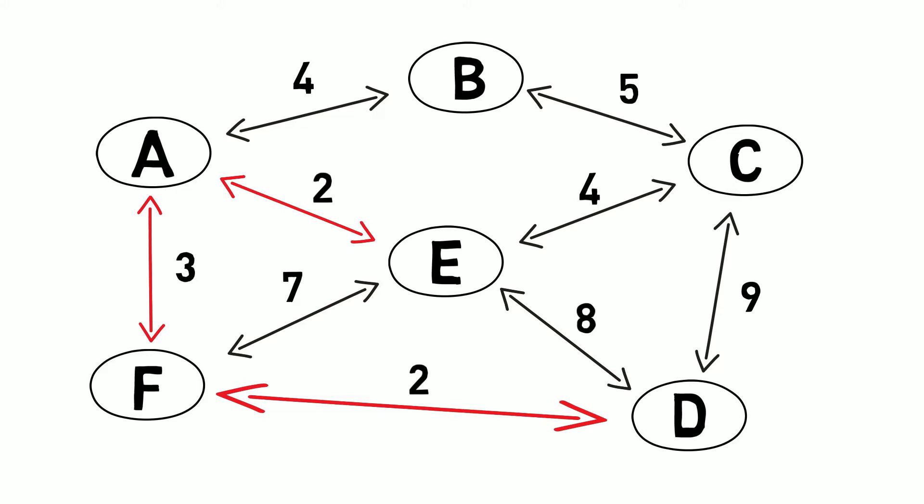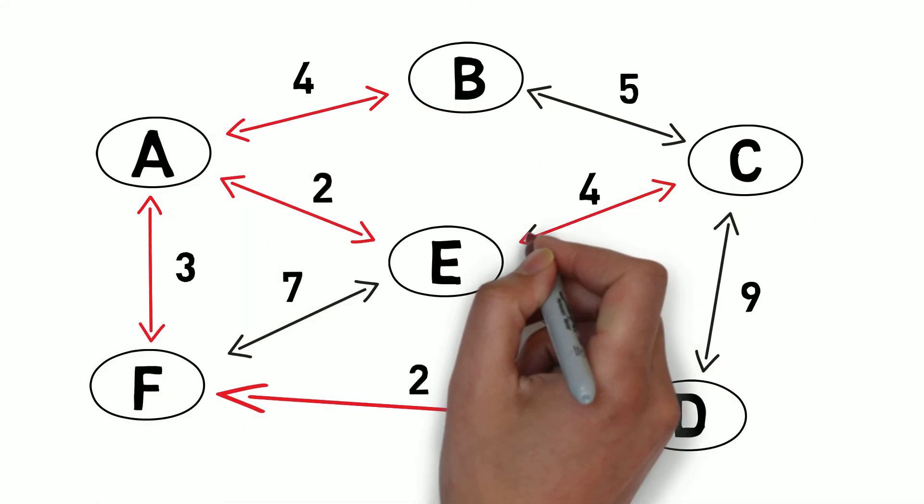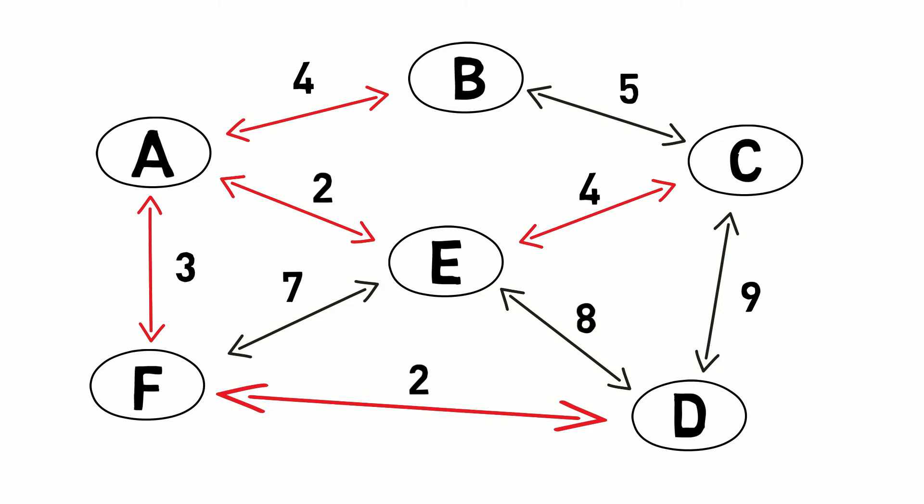The next smallest looks to be two 4's. We can start with A to B, then we can do E to C. When we do these, we have a connection between every single vertex. Since we started with the smallest vertices, we now know that all the other vertices are going to cost more and it does not make sense to continue.